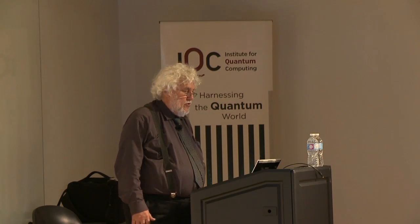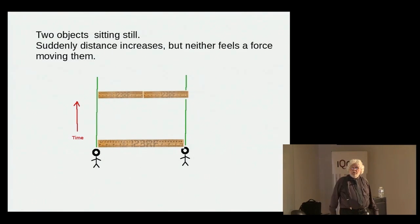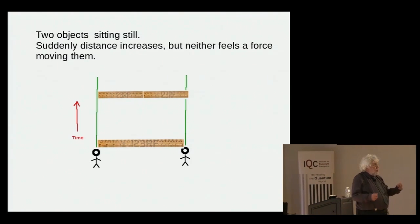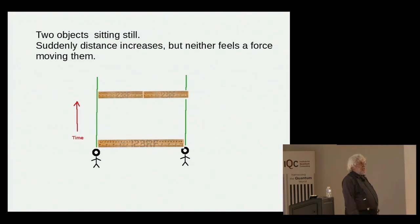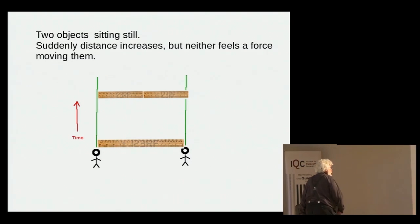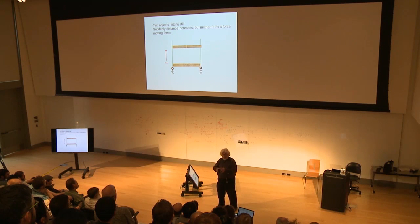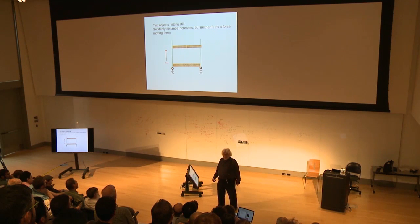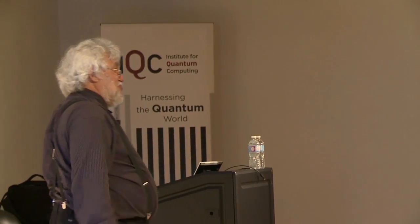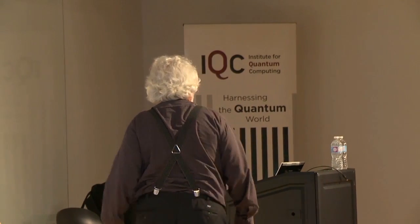In general relativity, if you have two observers sitting there, they can suddenly discover that the number of rulers they can fit between themselves can increase or decrease. One of the places where this occurs is the so-called expansion of the universe, which many people think of as a big explosion where pieces got thrown out and are getting farther apart. That's actually wrong - they're sitting at rest, and the reason they're getting farther apart is that the universe is creating more room for itself to live in.